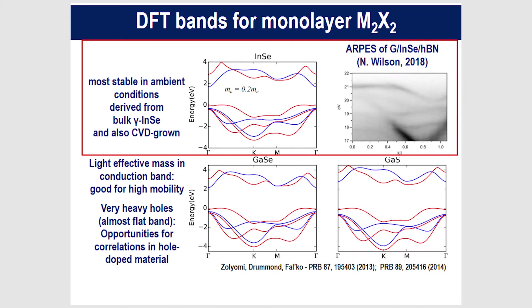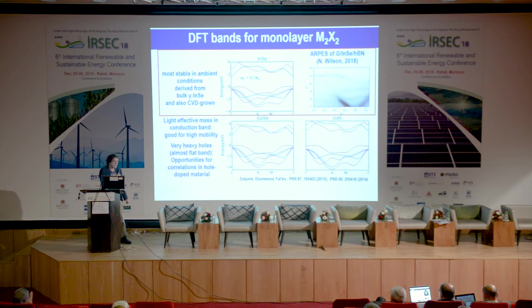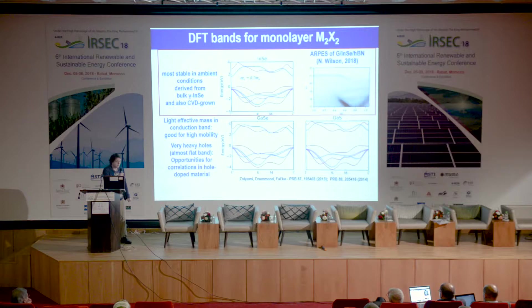Most of the talk focuses on indium selenide because it's the most stable in ambient conditions — though still not perfectly stable, so encapsulation is recommended. ARPES work by Neil Wilson at Warwick shows a similar slight offset in the valence band maximum, with almost flat hole bands. There is potential for interesting physics with holes — ferromagnetism and charge density waves have been predicted — but the Fermi level lies close to the conduction band edge, so most studies are n-type.